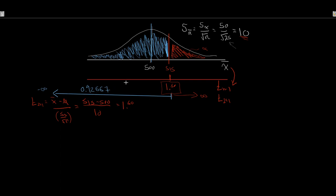To get the red right-tail area we want, we recognize the whole distribution sums to one. So 1 minus 0.92667 gives us 0.0733 — a 7.33% probability of witnessing that sample mean or greater.